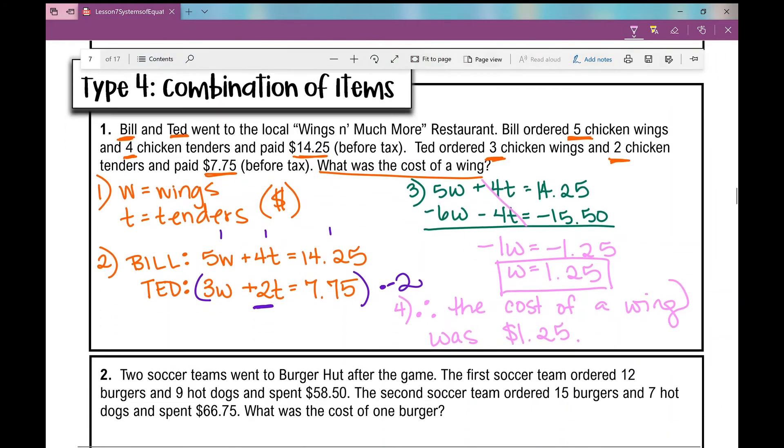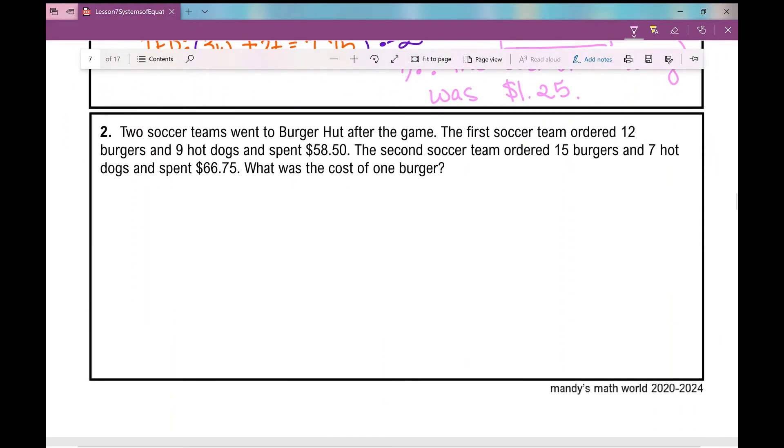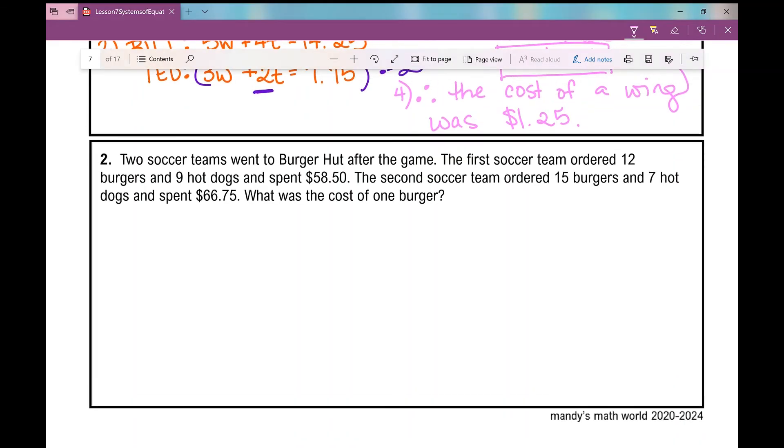Let's move on to the second example. Two soccer teams went to Burger Hut after the game. The first soccer team ordered 12 burgers and 9 hot dogs and spent $58.50. The second soccer team ordered 15 burgers and 7 hot dogs and spent $66.75. What was the cost of one burger? So do you see the similarities in how these two problems are set up?